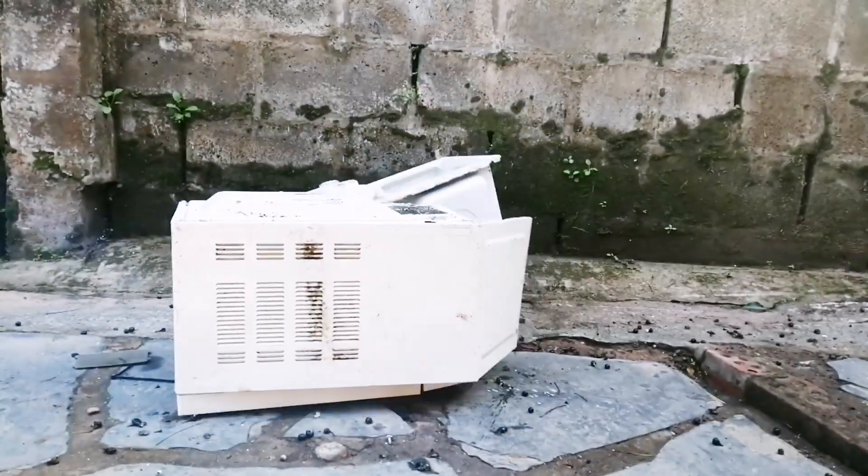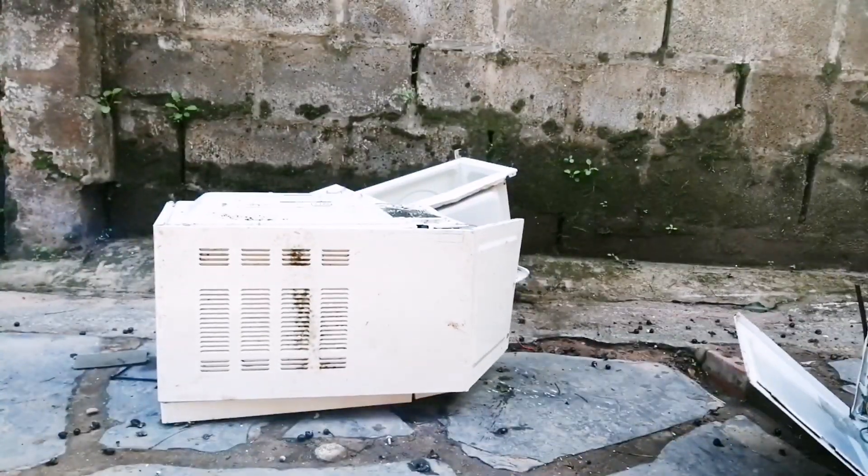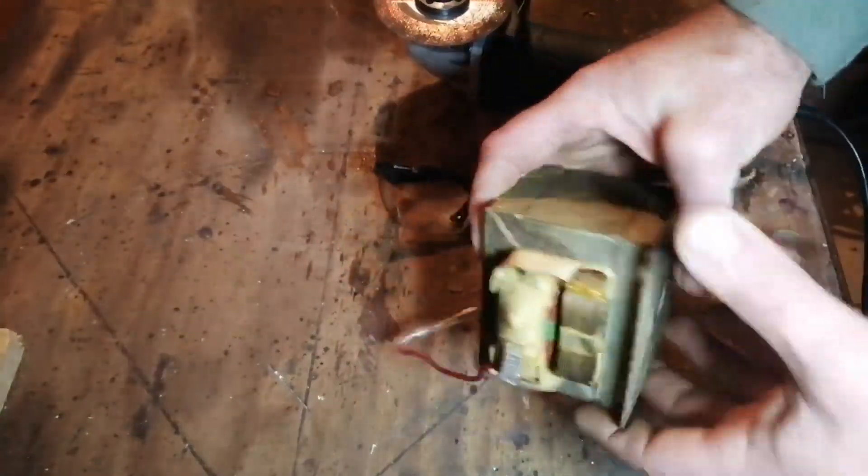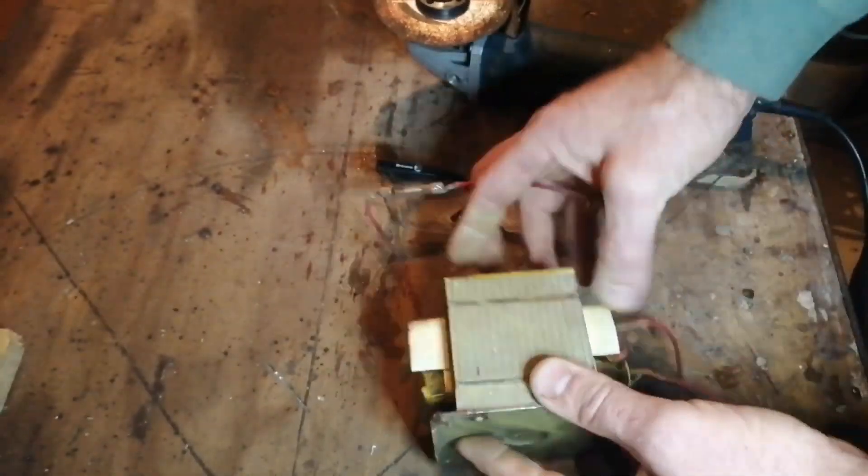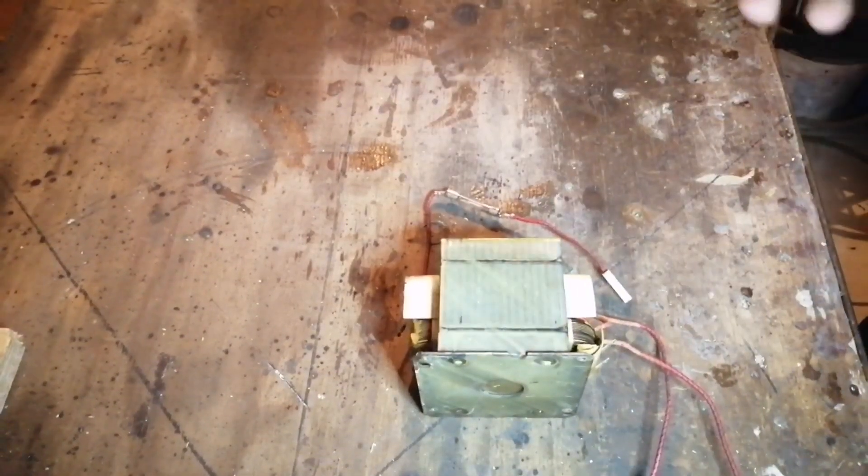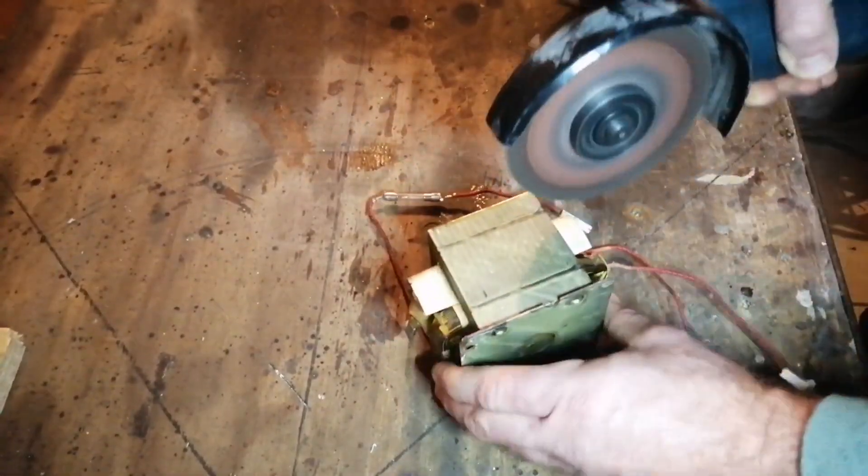I started by stripping out the transformers from a few old microwave ovens. I cut the coils out because I wanted to put a thinner wire because this will increase the voltage. Also, the previous coils were made out of aluminum. Aluminum does not have the same conductivity as copper.